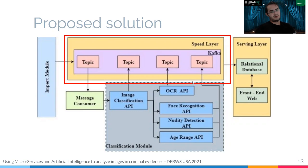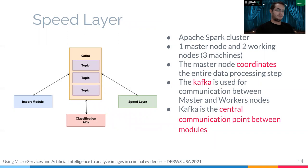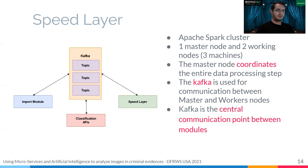The speed layer is responsible for providing fast data processing. In this layer, we have an Apache Spark cluster with one master and two worker nodes, in which the master is responsible for coordinating the entire data processing step. Another essential component in this layer is Apache Kafka. Kafka is a message broker responsible for providing communication among all services. If a classification API needs to send some data to the import model, for example, this communication is made through Kafka. Kafka is also used for communication between master and worker nodes.